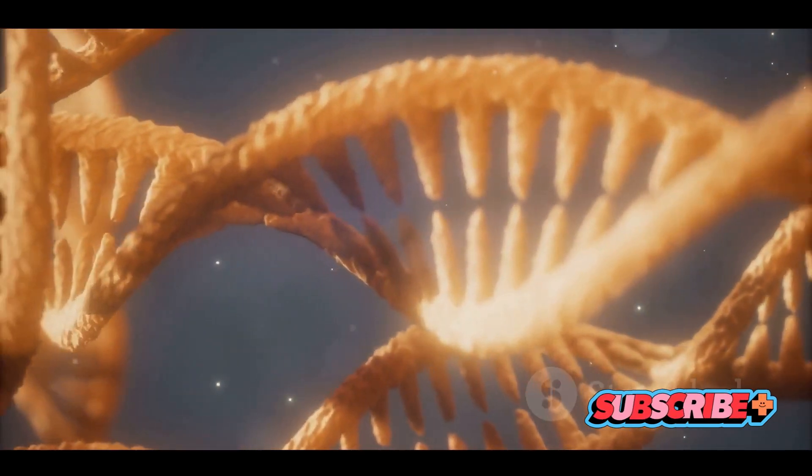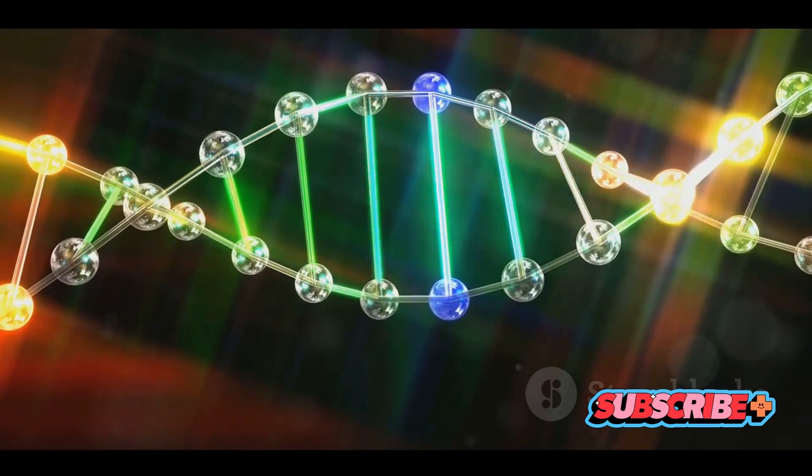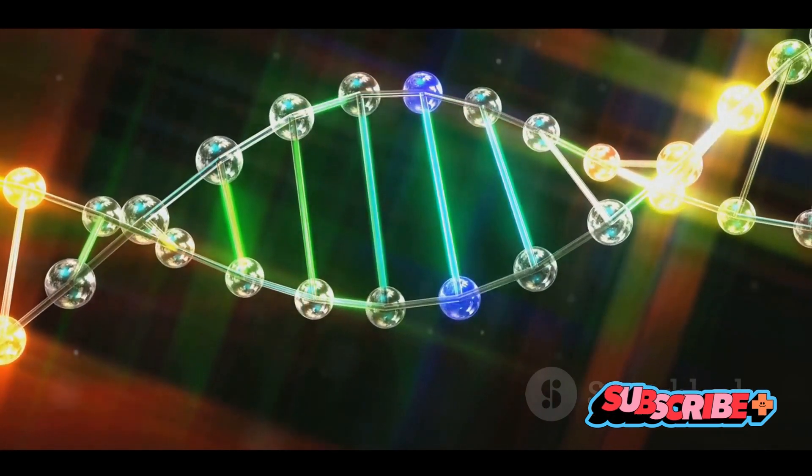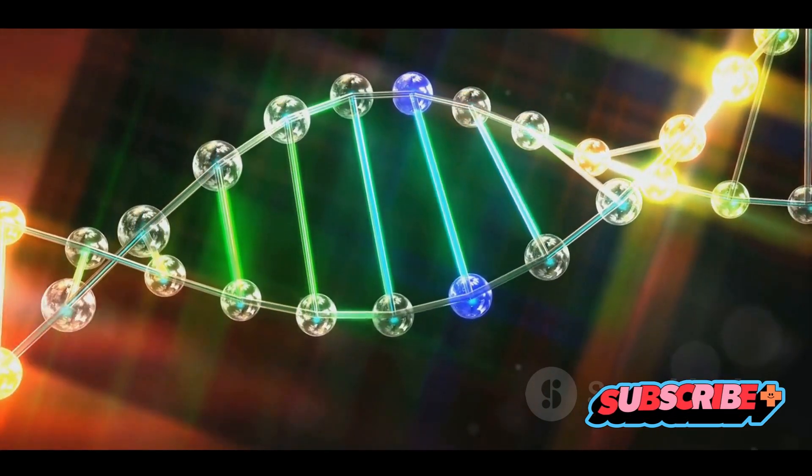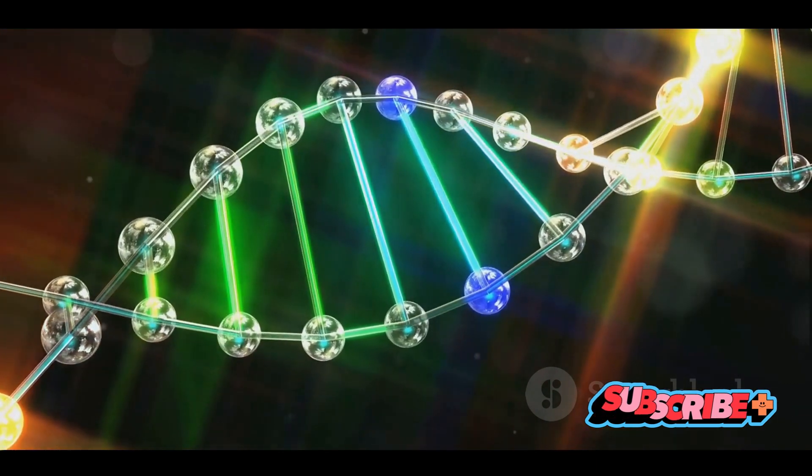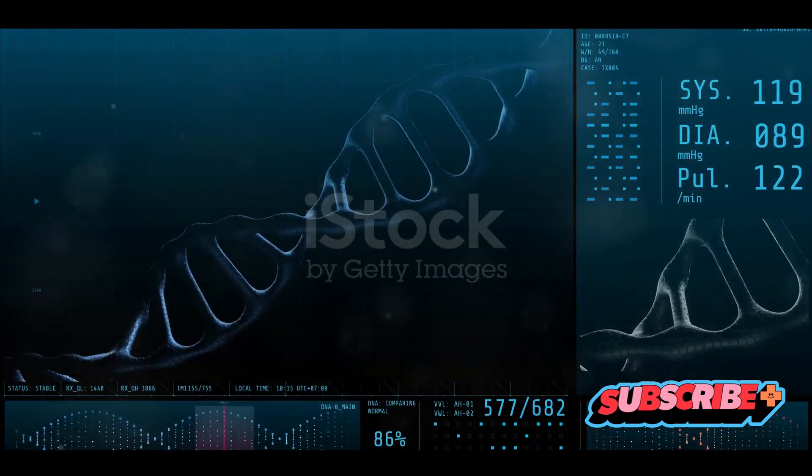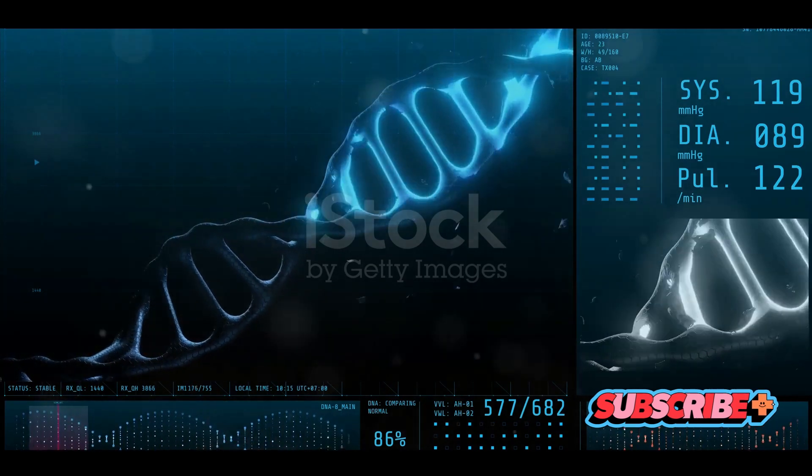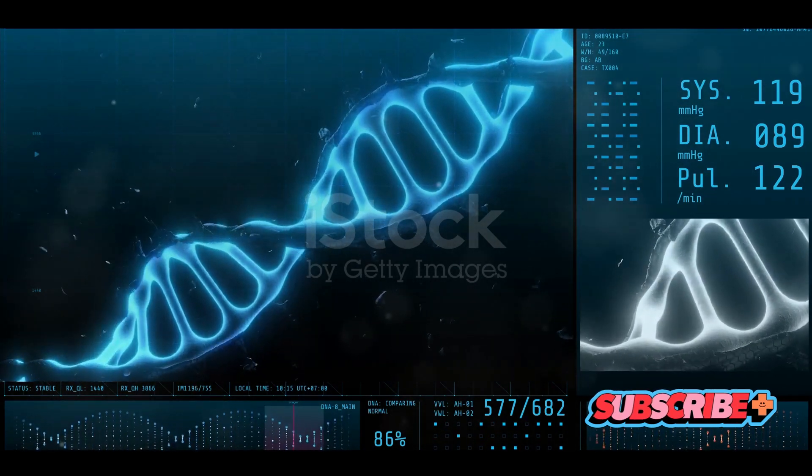You see, the double helix nature of DNA is like a ladder with the rungs made up of pairs of nitrogenous bases. Adenine pairs with thymine, and guanine pairs with cytosine. This complementary base pairing is vital for DNA's function.